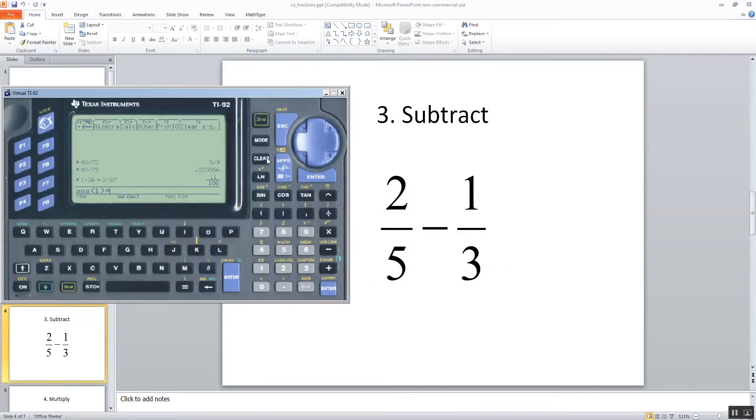Now let's look at this subtraction. I'm going to do 2 divided by 5 minus 1 divided by 3. Push enter. And gives us 1 15. That's pretty bizarre.